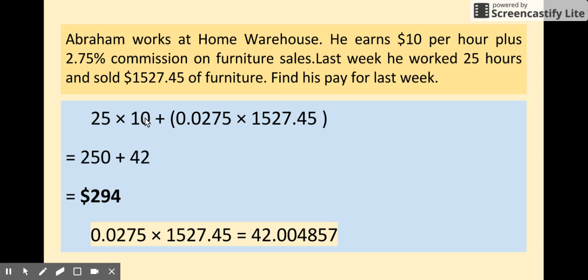his commission. We turn the percentage into a decimal. That would be 0.0275 times how much he sold on furniture. That would be $1,527.45.